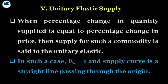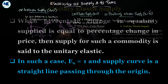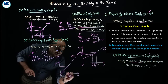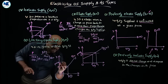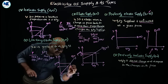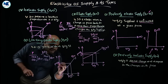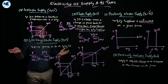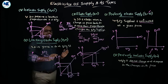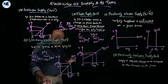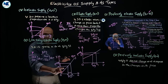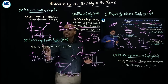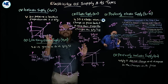For unitary elastic supply, the coefficient is equal to 1 — the changes in price and quantity are exactly the same proportion. The supply curve passes through the origin, and any supply curve that passes through the origin represents unitary elastic supply.